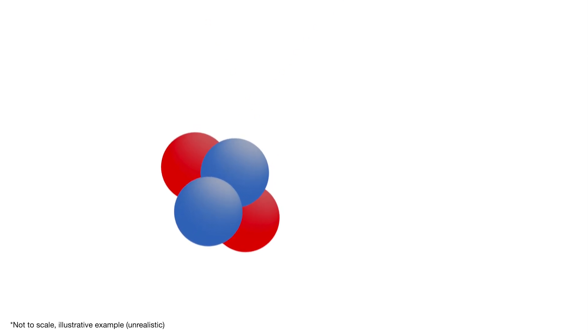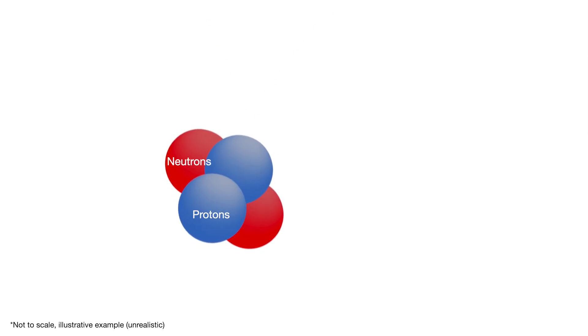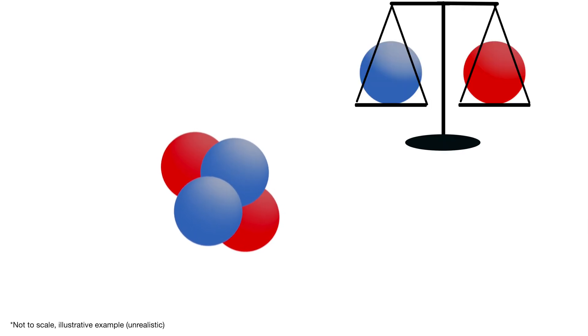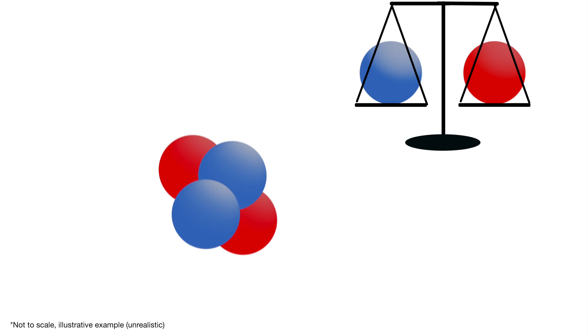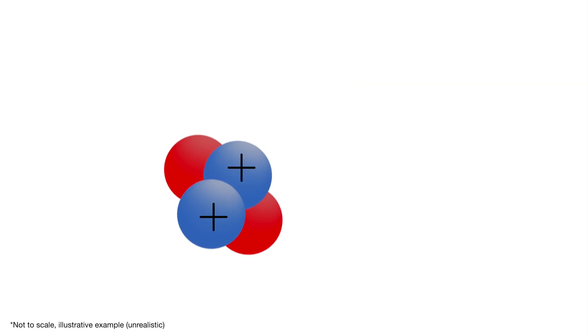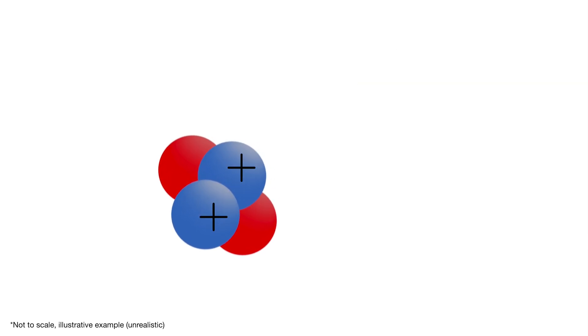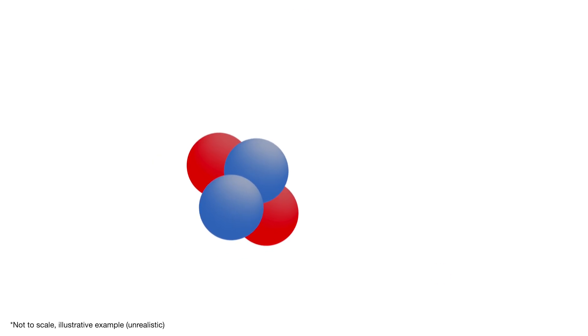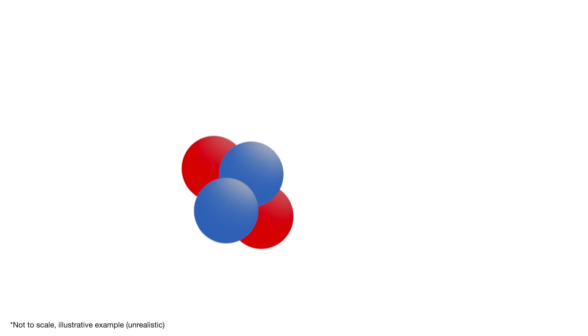Atoms have a nucleus in which most of the mass of the atom resides. The nucleus contains protons and neutrons. Protons and neutrons have the same mass. Protons have a positive charge, and neutrons a neutral charge. The number of protons is what defines an element. Here, with two protons, we have helium.